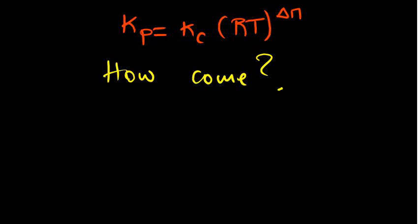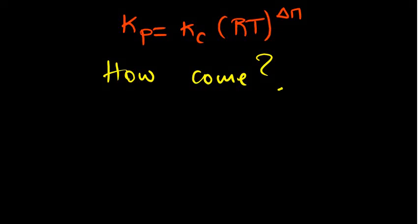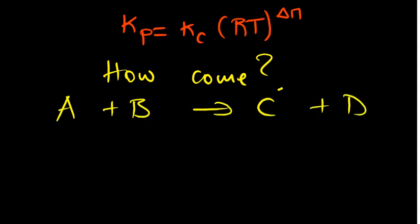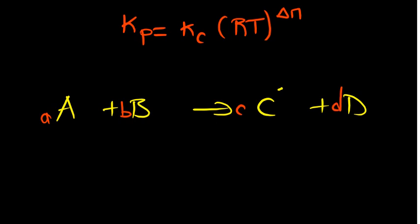I'm sure you know this equation already: Kp is equal to Kc times RT raised to the power delta N. We want to prove how that's true. We're going to use this setup where we have a reaction A and B reacting to give us C and D, and we're going to use small letters to denote our coefficients — a, b, c and d. We know that our Kp expression is going to be dependent on the pressures, assuming all species are in gaseous states.